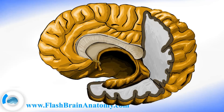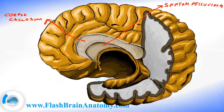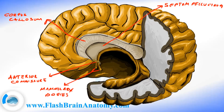Now let's write this all down. This over here was the corpus callosum. This over here was the septum pellucidum. This was the anterior commissure. These two bodies were the mammillary bodies. Then we had the fornix, and then the hippocampus over here.